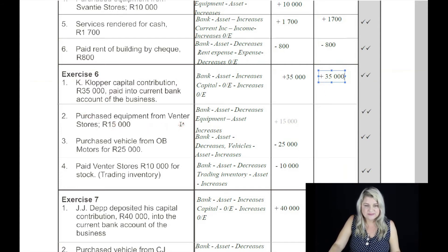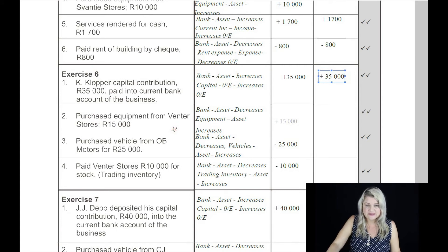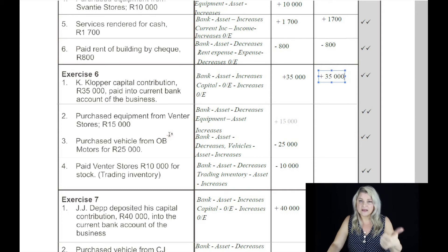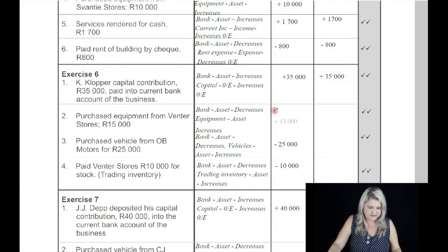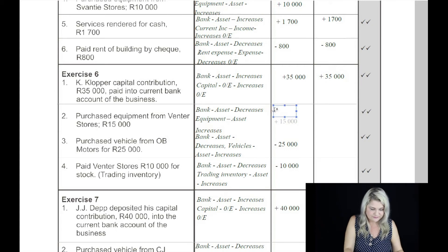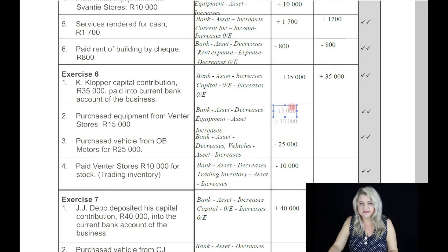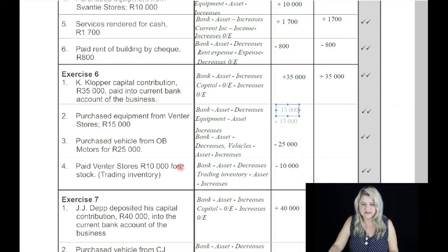On the second: purchase equipment from Fenter Stores, 15,000 Rand. The two accounts affected are bank and equipment — both are assets. One asset is being decreased, which is bank, and the other asset is being increased to the value of 15,000 Rand.